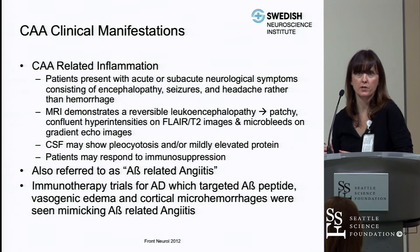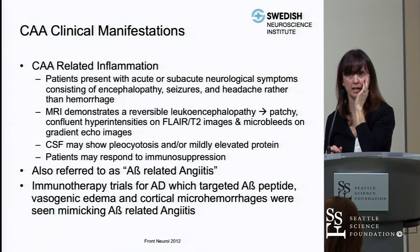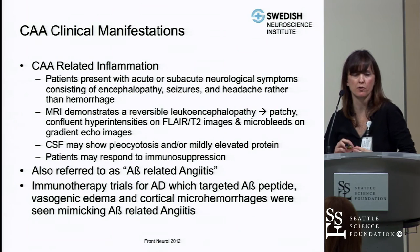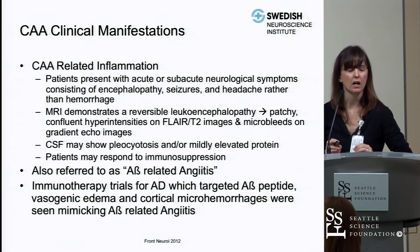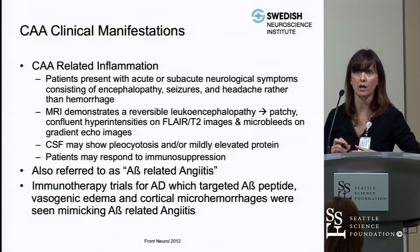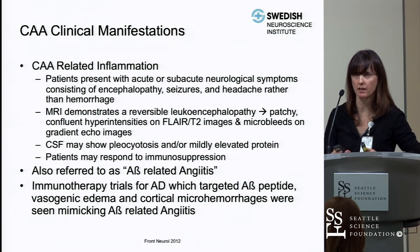Throughout the years, immunotherapy trials for Alzheimer's disease targeting amyloid beta peptide have been conducted, and some patients develop vasogenic edema and cortical microhemorrhages from treatment. During residency at Rush, I encountered a patient on a monoclonal antibody for amyloid beta peptide who presented with a PRES-like clinical syndrome, essentially mimicking inflammatory amyloid beta-related angiitis.